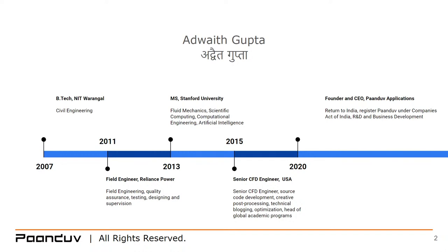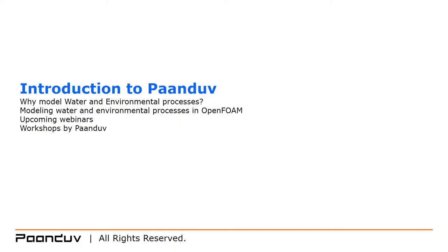Let's start with a little bit of introduction about myself. My name is Adweth Gupta. I have a bachelor's degree from NIT Warangal in civil engineering, followed by two years of field work as a civil engineer, followed by a master's degree at Stanford, where I mainly picked up computational fluid dynamics, scientific computing, and artificial intelligence. After that I worked for five years in a CFD software development company in the USA as a senior CFD engineer, source code developer, technical blogger, and head of global academic programs. I moved back to India last year and since then I've been serving as founder and CEO of Pandav Applications.